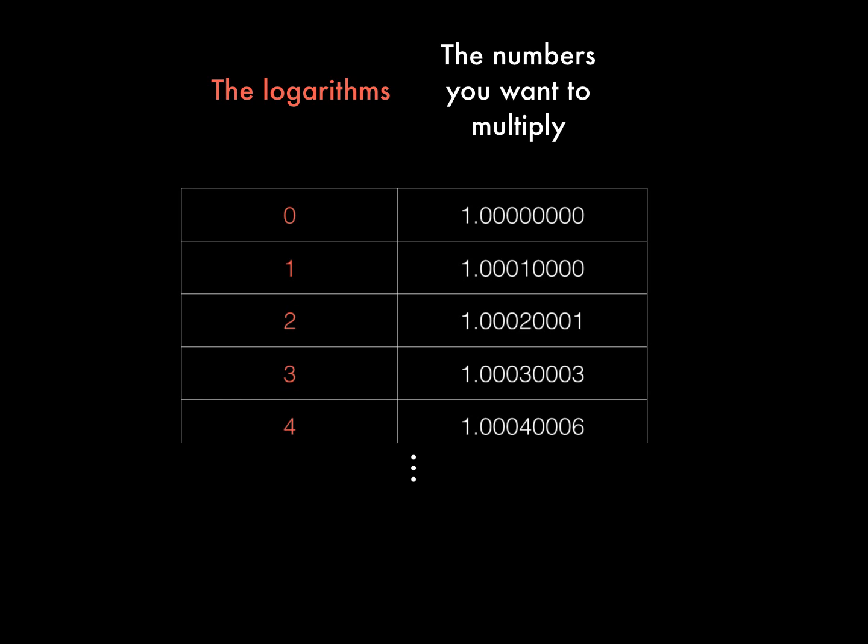We could scale the numbers differently, and still stay within the spirit of Yost's logarithms. Let's go back to starting with 1 on the right-hand side, like we did to begin with. And, for the logarithms on the left, instead of scaling them up by a factor of 10, we could scale them down by a factor of 10,000, like this.